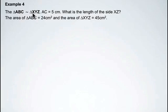We're also given that the area of triangle ABC is 24 centimeters squared and that the area of the similar triangle XYZ is 45 centimeters squared.